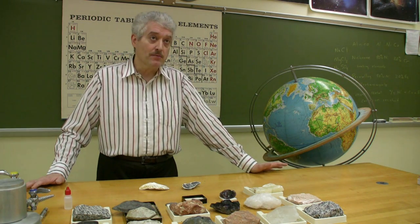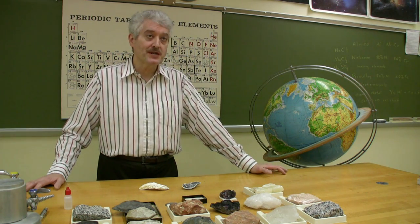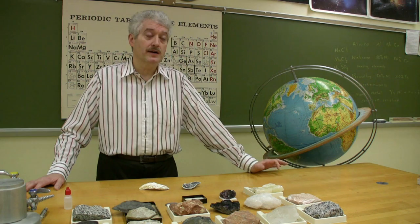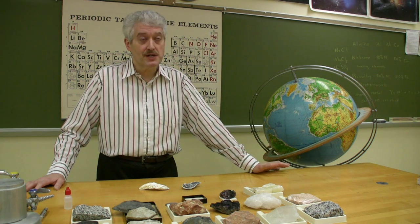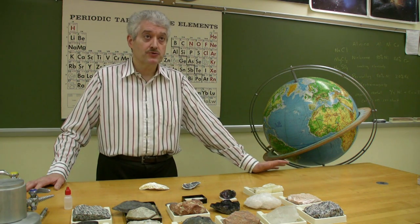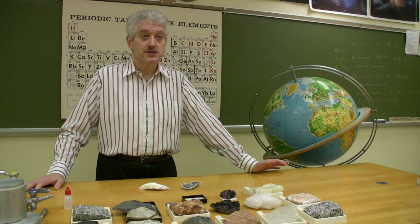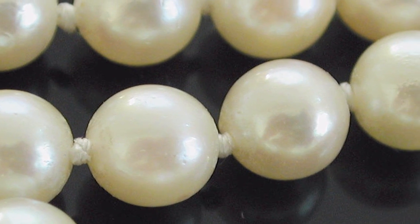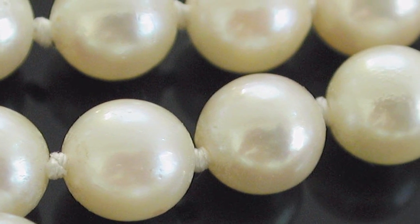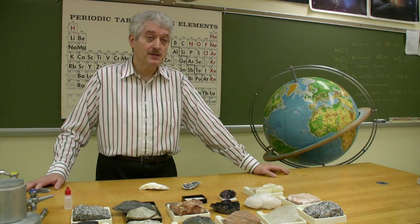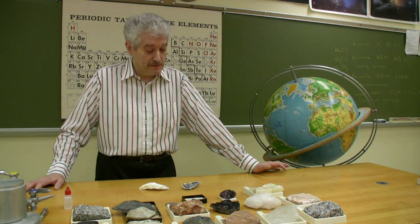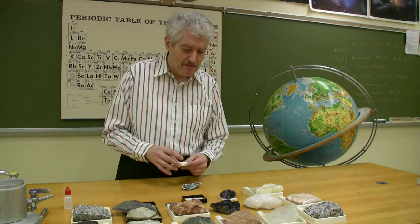One example is amber, which comes from tree sap that hardens into a yellow interesting material that sometimes contains trapped insect fossils. But another example is the pearl, which is very familiar to a lot of people and at times in the past has been very valuable, although synthetic ones are made today.